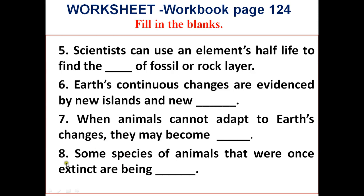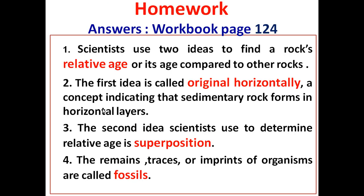Now let's check the answers. The first answer is: scientists use two ideas to find a rock's 'relative age,' or its age compared to other rocks. The second answer is: the first idea is called 'original horizontally,' a concept indicating that sedimentary rock forms in horizontal layers. The second idea scientists use to determine relative age is 'superposition.' The remains, traces, or imprints of organisms are called 'fossils.'